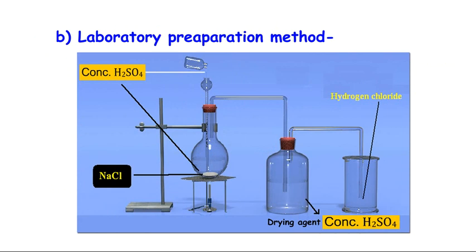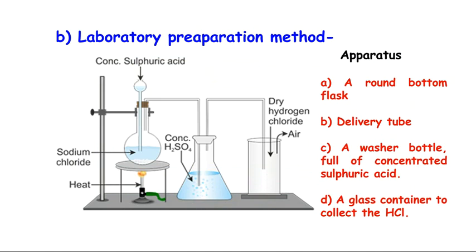The popular way to prepare HCl gas is the laboratory preparation method. According to the picture, we have used a round bottom flask, a delivery tube, a washer bottle full of concentrated sulfuric acid, and a glass container where we collect HCl by the upward displacement of air.